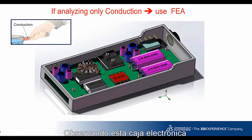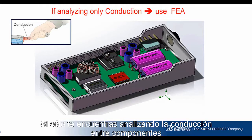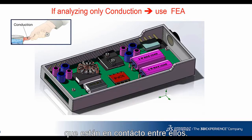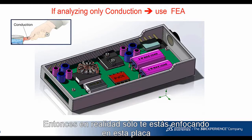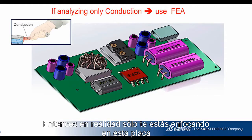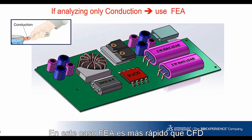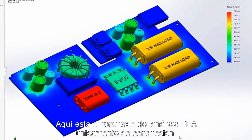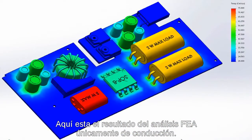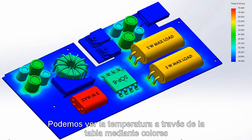Looking at this electronic enclosure, if you are only analyzing conduction between components which are in contact with each other, then you are really looking at this board only — no enclosure, no fluid, no air around the components. In this case, FEA is faster than CFD. Here is the result of the FEA analysis with conduction only. You can see the temperature gradient across the board expressed in colors.